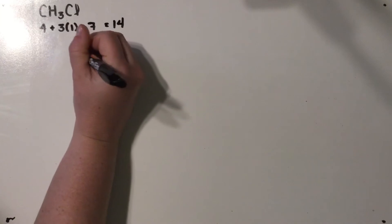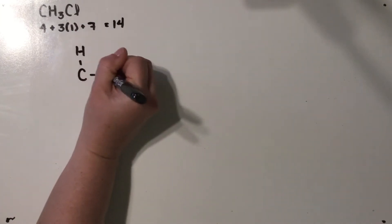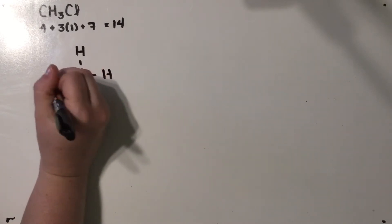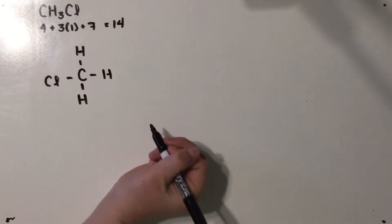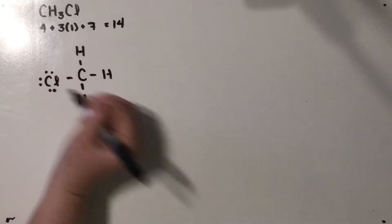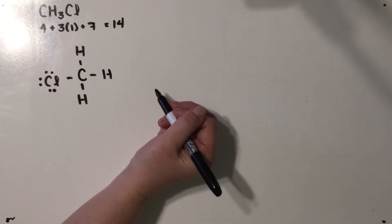We've got our C in the middle, each hydrogen is going to attach on, and of course our chlorine as well. And then our six electrons that we still have to play with are all going to go to chlorine since hydrogen really doesn't want any more.